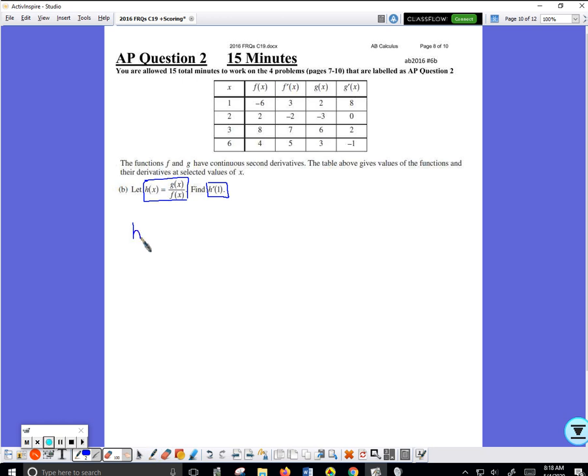So it's the bottom function f(x) multiplied by the derivative of the top—g prime is the derivative of the top—subtract the top function multiplied by the derivative of the bottom, all divided by the bottom being squared.